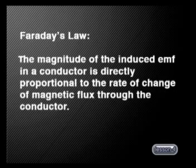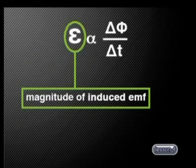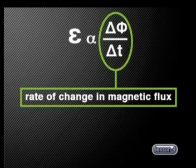From his experiments, Faraday developed a theory to explain why an EMF is induced in a coil when there is relative motion between a coil and a magnet. His explanation has become known as Faraday's law of electromagnetic induction: the magnitude of the induced EMF in a conductor is directly proportional to the rate of change of magnetic flux through the conductor. For a given coil, we can write a mathematical expression for Faraday's law as: E is directly proportional to delta phi divided by delta t. E stands for the magnitude or size of the induced EMF, and delta phi over delta t is the rate of change in magnetic flux.